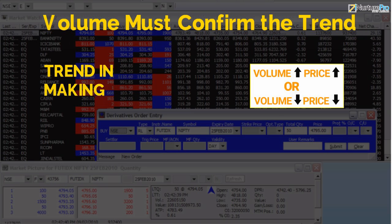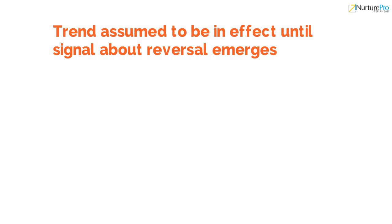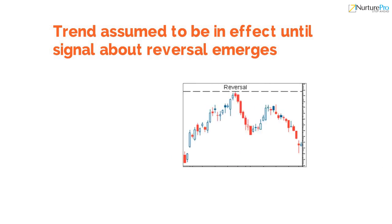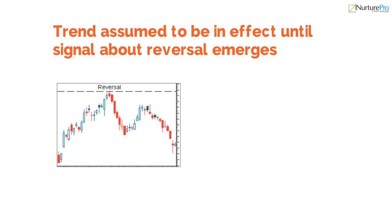Dow's last tenet says that a trend is assumed to be in effect until it gives definitive signals that it has reversed. As the laws of motion state that an object which is in motion will continue to be in motion until some external force causes it to stop. Similarly, a trend will continue until some market forces cause the trend to be reversed.